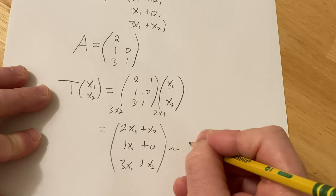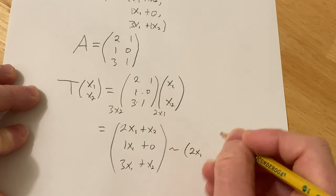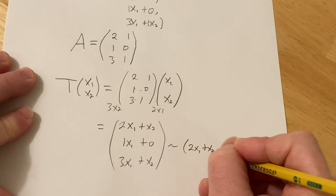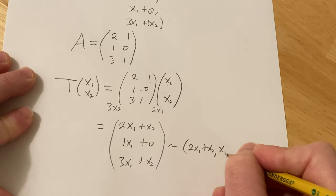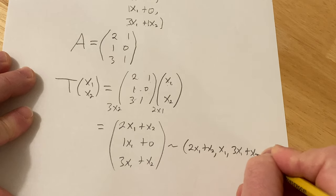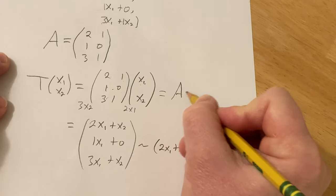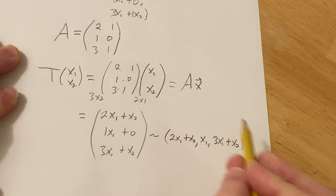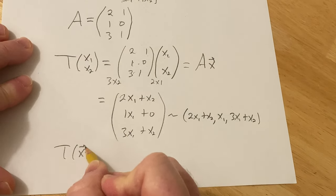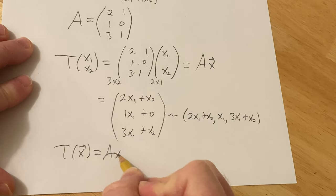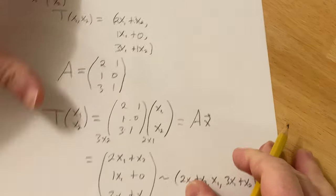People write it like this. They write it as 2x1 plus x2, x1, 3x1 plus x2. So that's why it's the same. And you can use shorthand for this. You can write this as Ax. Even more succinctly. I think that's the word. I can't say it. You can write it like this. Okay. So that's the idea.